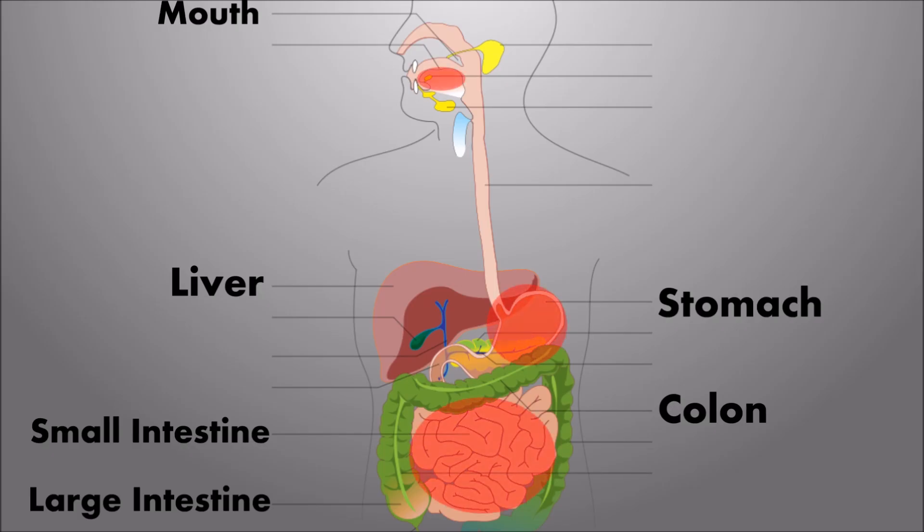Along with getting jaundice, which is the skin turning yellow, and bleeding on the liver, symptoms of the disease include bleeding from the mouth, intestines, and stomach.